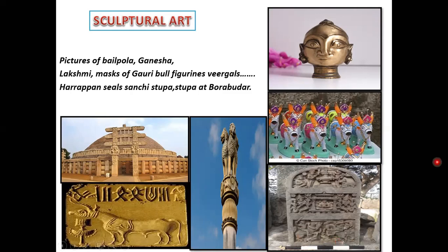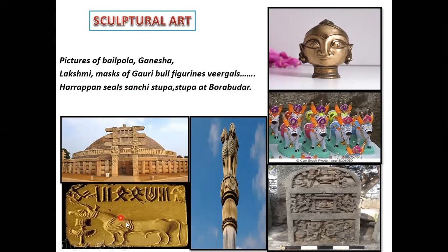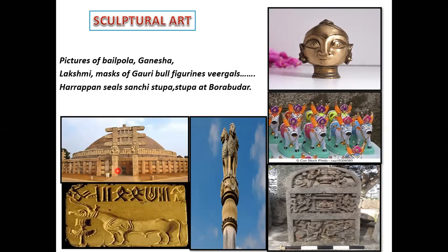Under sculptural art, we also have Harappan seals. Going back to the previous slide, you have the Harappan seal made out of clay or terracotta. There is some kind of script on it, and this script has not yet been deciphered. Once we learn more about the script, we'll get a lot of information about Harappan culture. You also have the Sanchi Stupa, which is again a very beautiful example of sculptural art.